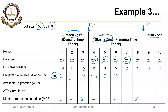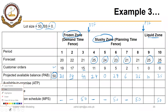Since ending inventory reaches zero, we do need an MPS in period 6. So 0 plus 50 minus the greater of 5 and 23 (which is 23) gives 27. Then 27 minus 21 equals 6, so no MPS is required in period 7. We do need an MPS in period 8: 6 plus 50 equals 56, minus 21 equals 35, and 35 minus 25 equals 10. Since 10 is less than the demand of 25, an MPS of 50 is placed: 10 plus 50 minus 25 equals 35.